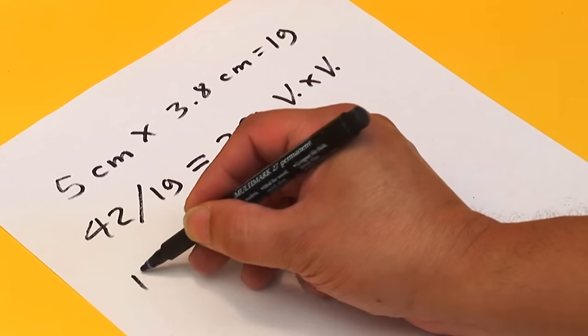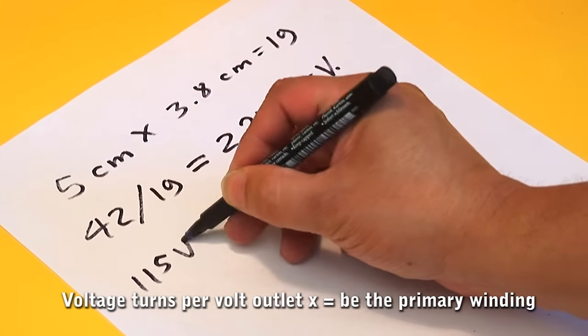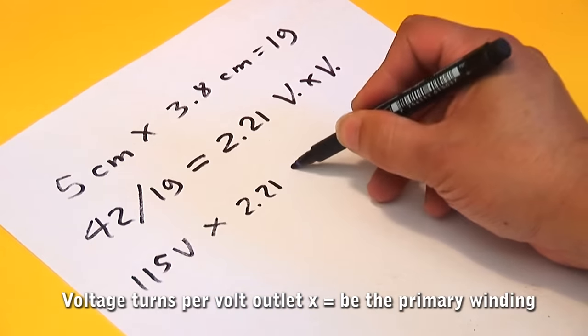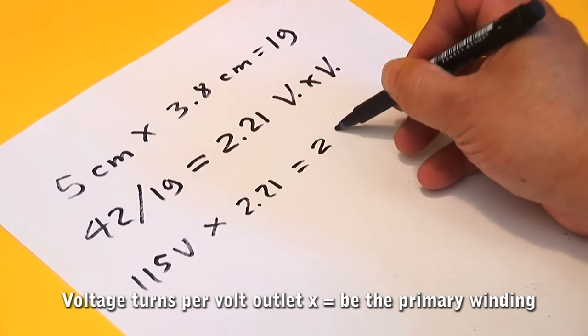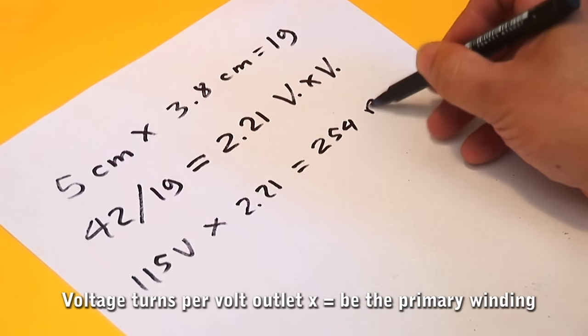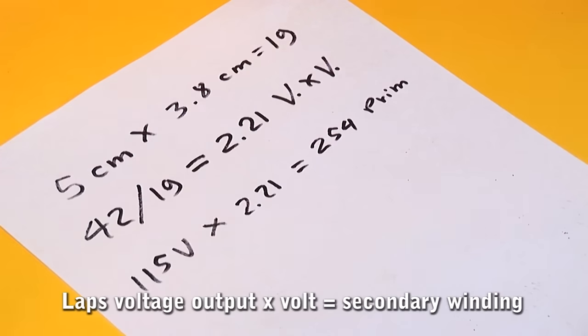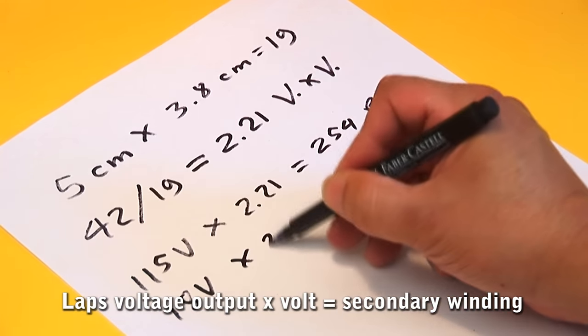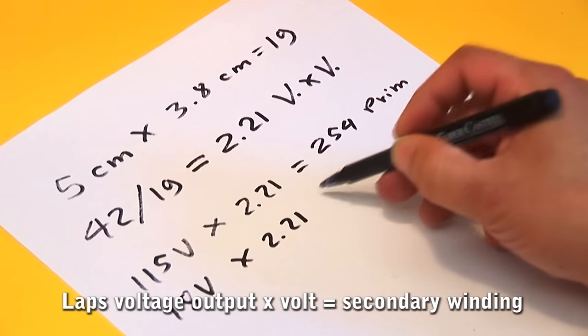As in the public of our country we have a voltage of 115 volts multiplied by the number of turns per volt. Now we know how many laps given in the primary winding. For the secondary winding, in this case 18 volts multiplied by the number of turns per volt gives 40 turns of wire doubles.